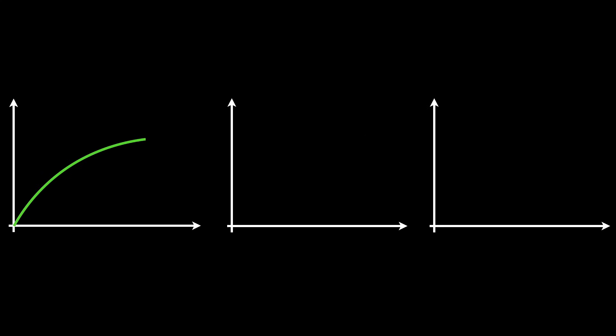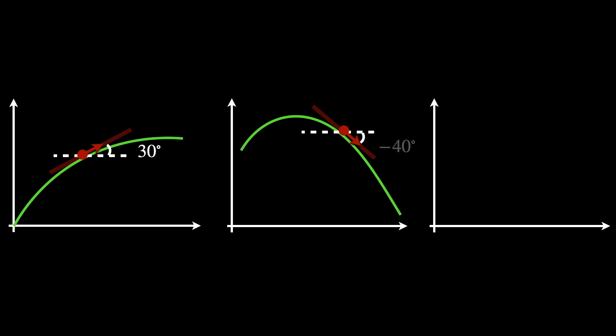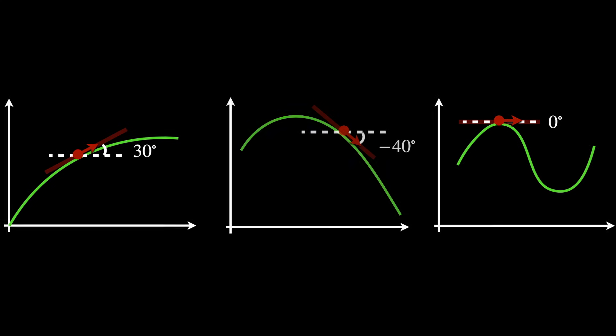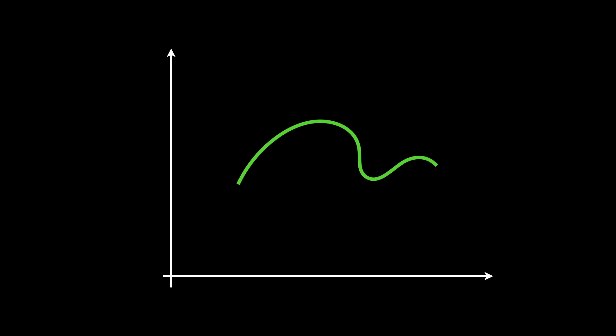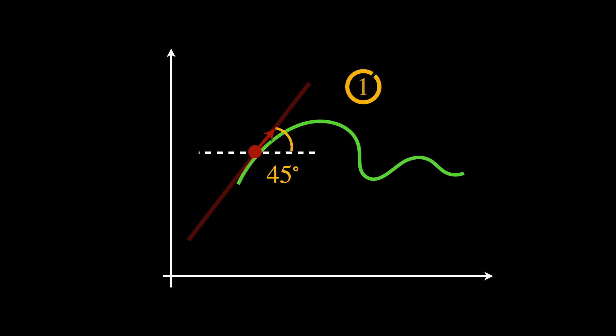In other words, how fast the function is going up, going down, or simply being stationary at a fixed height. We can consider a tangent line at a specific point with an angle of 45 degrees as having inclination, or steepness, 1.